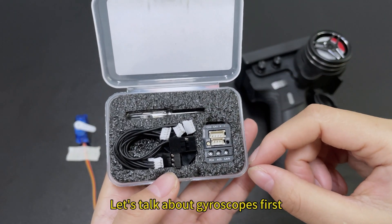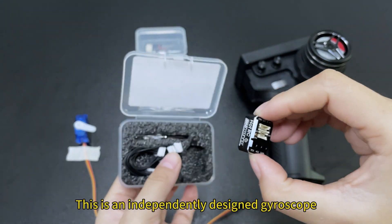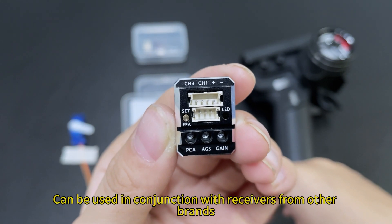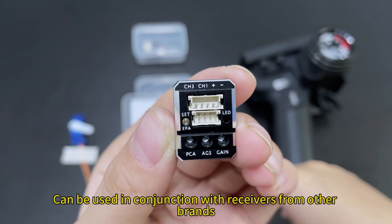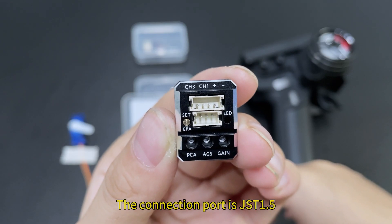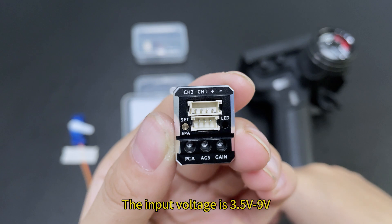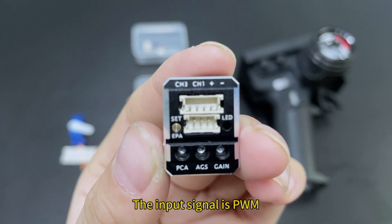Let's talk about gyroscopes first. This is an independently designed gyroscope, can be used in conjunction with receivers from other brands. The connection port is JST-1.5, the input voltage is 3.5V-9V, the input signal is PWM.